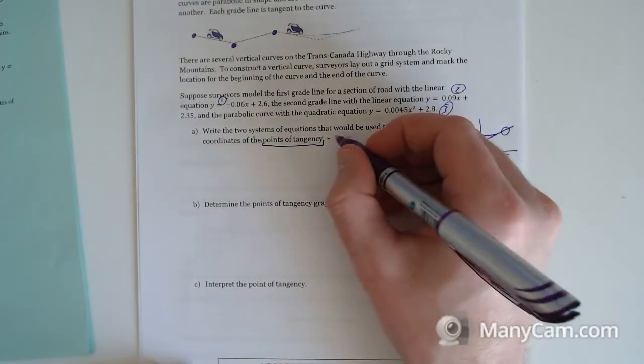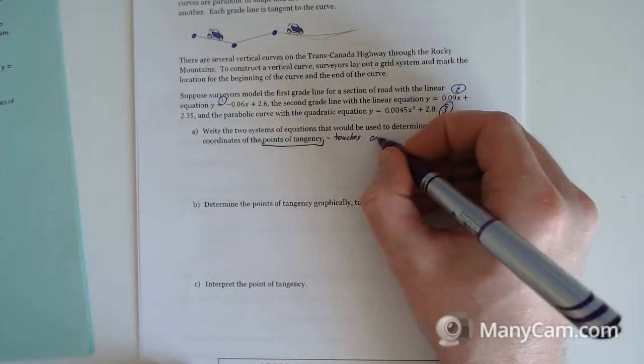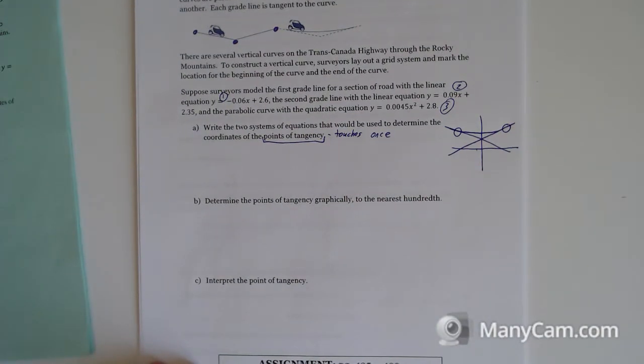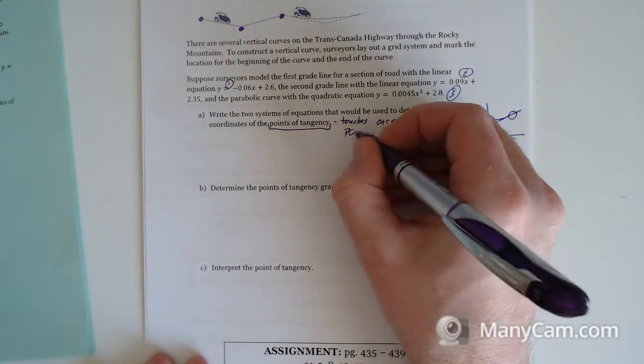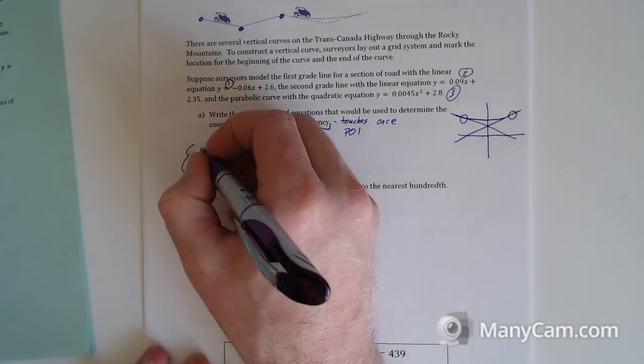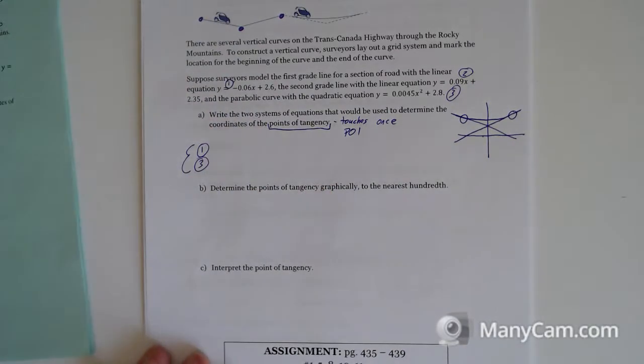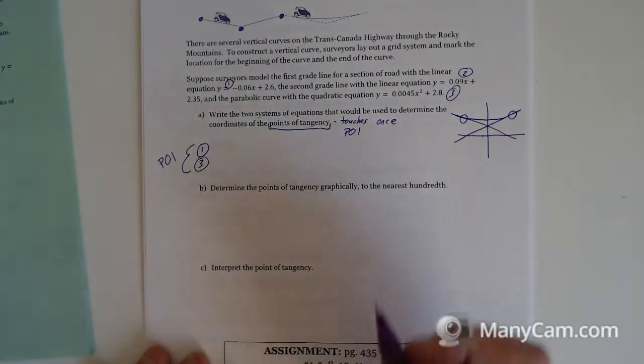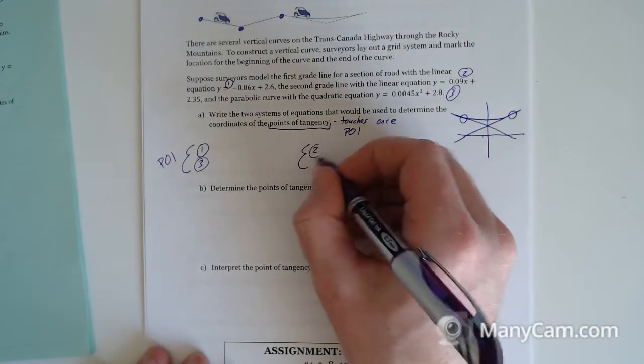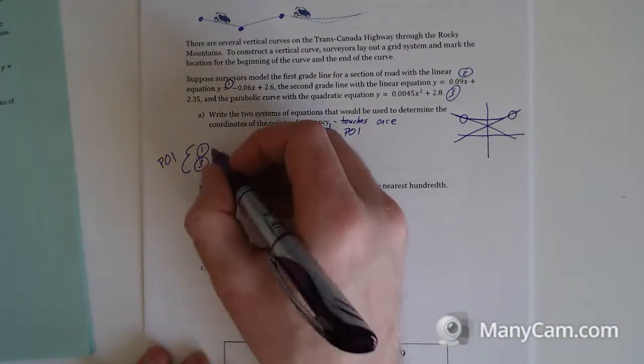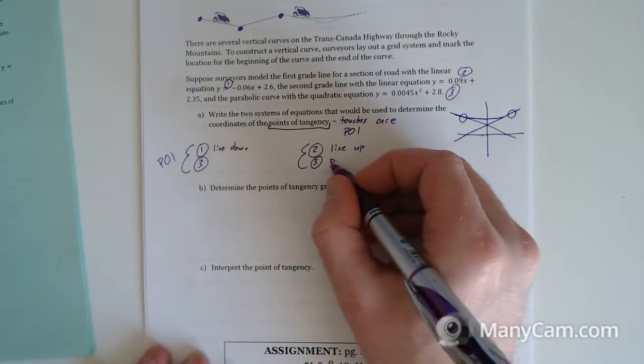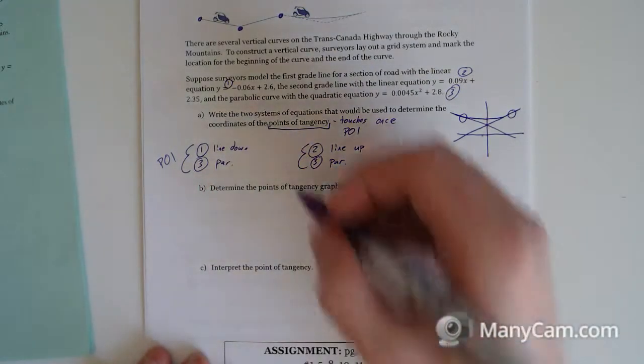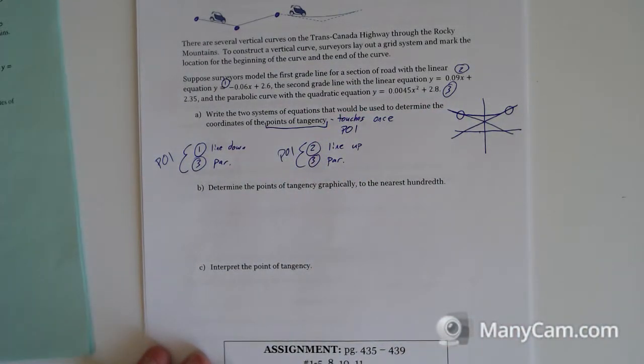A tangent means it touches once. Any kind of a curve that only touches a line once at one particular point. We're going to be doing a lot with tangency in calc next year if you're taking calc. So find the points of tangency, that's just our points of intersection. One system would be equation number one mixed with equation number three, and find the POI there. And then our second one is going to be a system with equation two and equation three. This is the line down, this is the line up, and these are the parabolas.